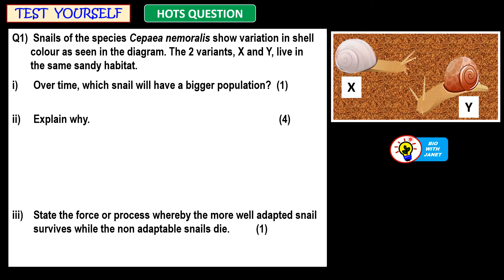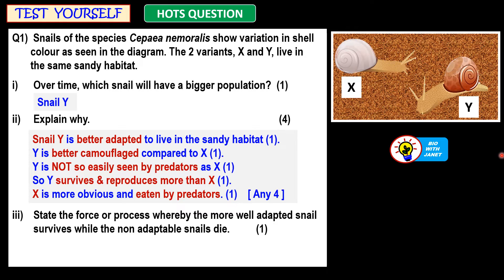Let's look at the answers. Over time, which snail will have a bigger population? Snail Y. Snail Y is better adapted to live in the sandy habitat, which is brown in colour. Y is better camouflaged compared to X.